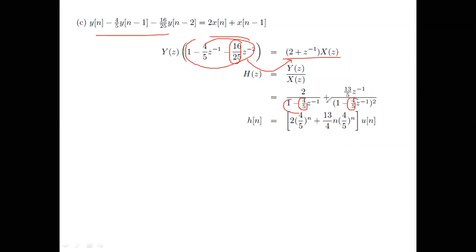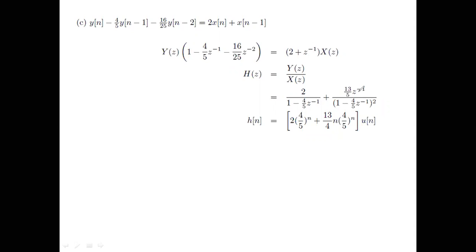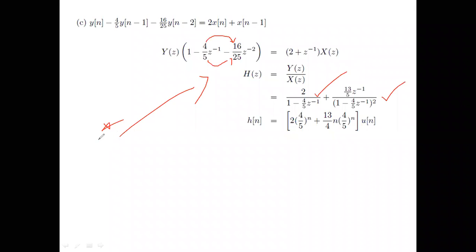Observe how the denominator has been split: since 4²=16 and 5²=25, the denominator factors as (1 − (4/5)z⁻¹)². This is a repeated-root trick question — you can verify it with the quadratic formula: [−b ± √(b²−4ac)] / 2a. Mark this with a star and verify on your notepad.